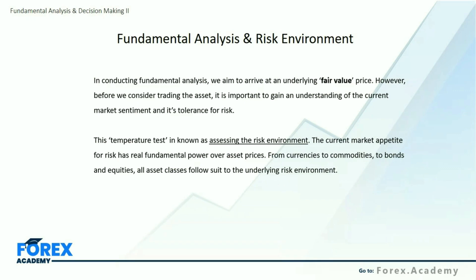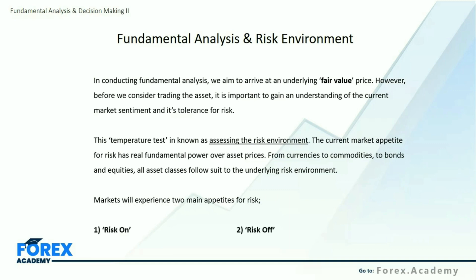The current market appetite for risk has real fundamental power over asset prices — from currencies to commodities to bond markets to equities. All asset classes follow suit to the underlying risk environment. Markets will experience two main appetites for risk: first, we have risk on, and second, we have risk off.